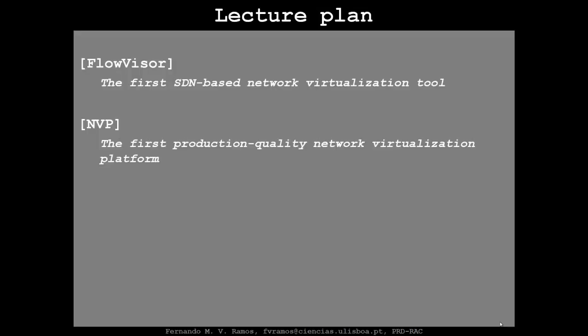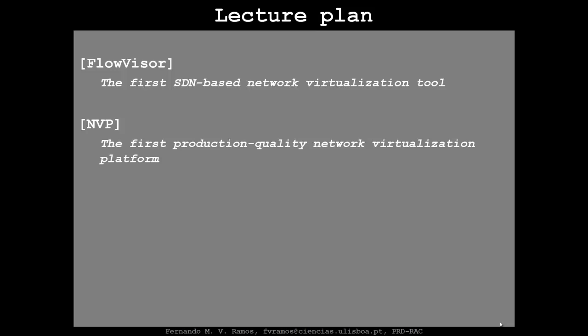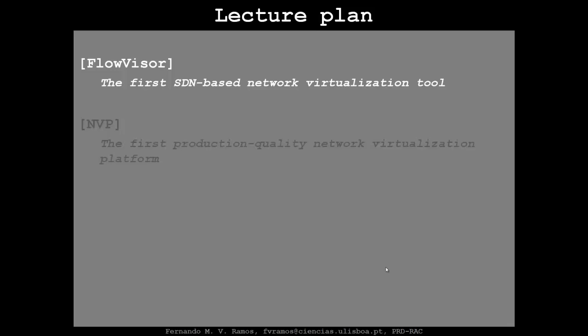In today's lecture, the plan is to first start with FlowVisor — this was the first SDN-based network virtualization tool. The goal for FlowVisor was to virtualize SDNs in particular. Then we move to NVP, which is this platform — NSX is the commercial name for NVP. NVP was the first production-quality network virtualization platform that for the first time enabled the full decoupling of virtual networks from the substrate network. So let's start with FlowVisor.